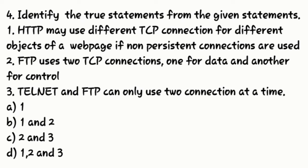Question number four: identify the true statements from the given statements. One: HTTP may use different TCP connections for different objects of a web page if non-persistent connections are used. Two: FTP uses two TCP connections, one for data and another for control. Three: Telnet and FTP can only use two connections at a time. So they are given four options.